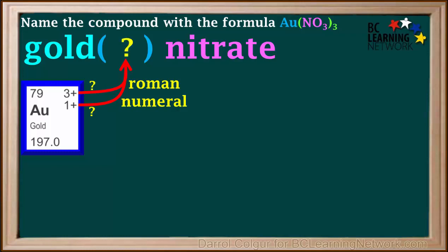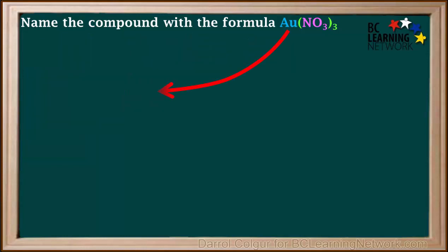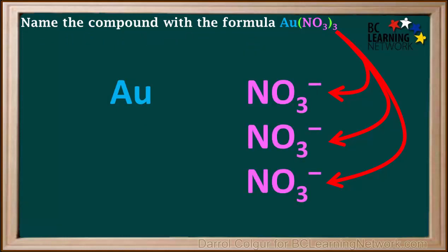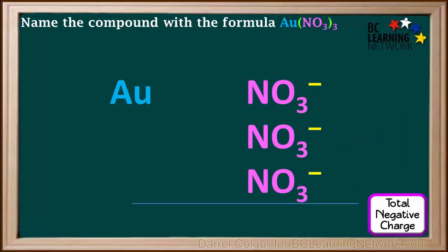Here's how we find the charge on gold. The formula tells us we have one gold ion and three nitrate ions. Each nitrate ion has a charge of negative 1, so the total negative charge is 3 times negative 1, which is negative 3.